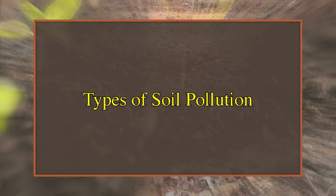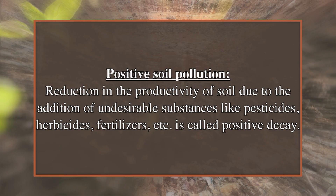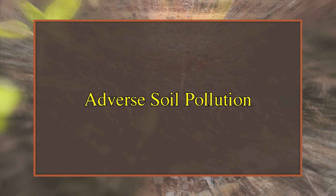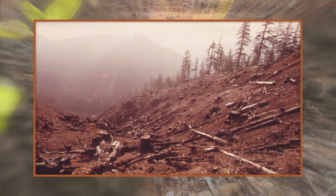Soil pollution is of two types. First, positive soil pollution: the reduction in the productivity of soil due to the addition of undesirable substances like pesticides, herbicides, and fertilizers. These pollutants have a cumulative effect and kill soil organisms. Second, adverse soil pollution: the reduction in soil fertility and productivity caused by the removal of useful components and minerals from soil by erosion, deforestation, and improper methods of agriculture like excessive tillage.